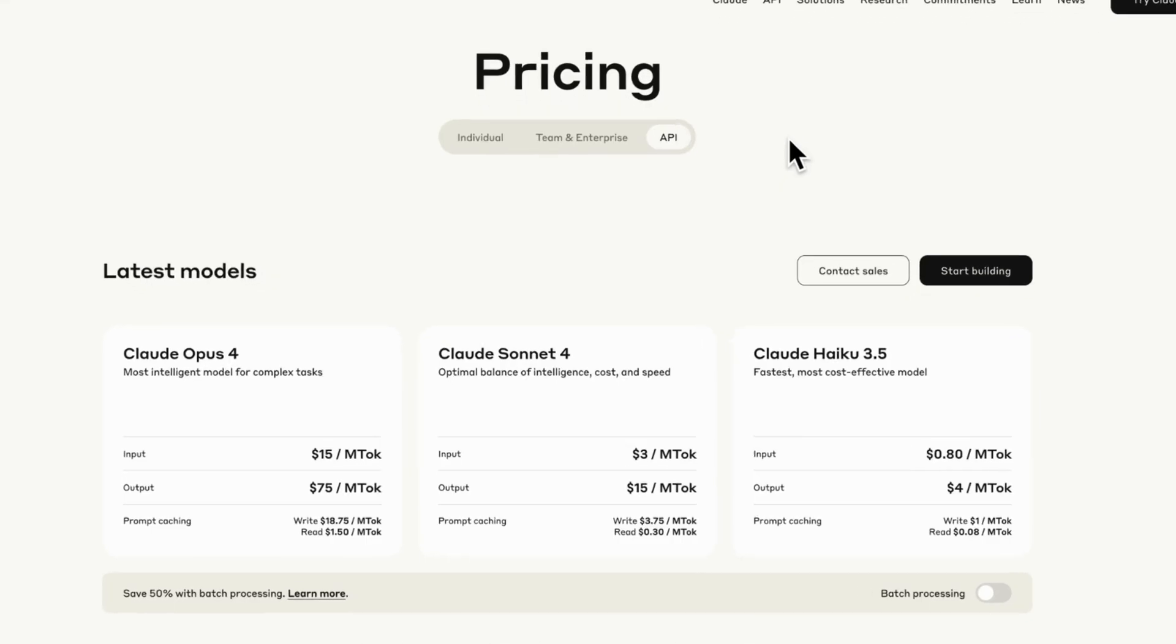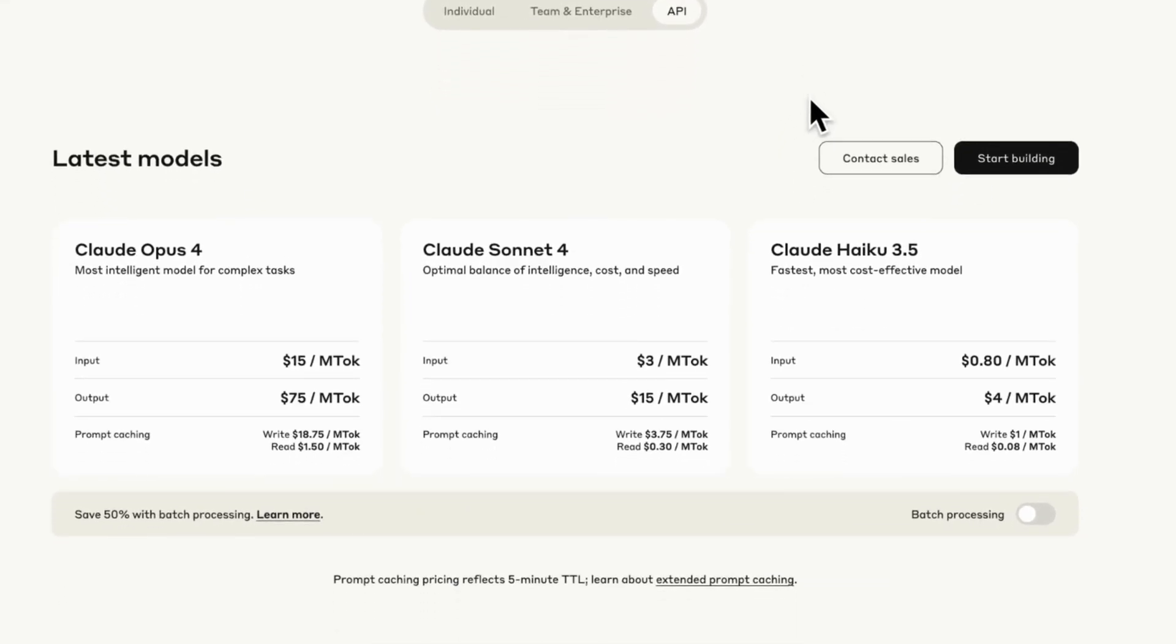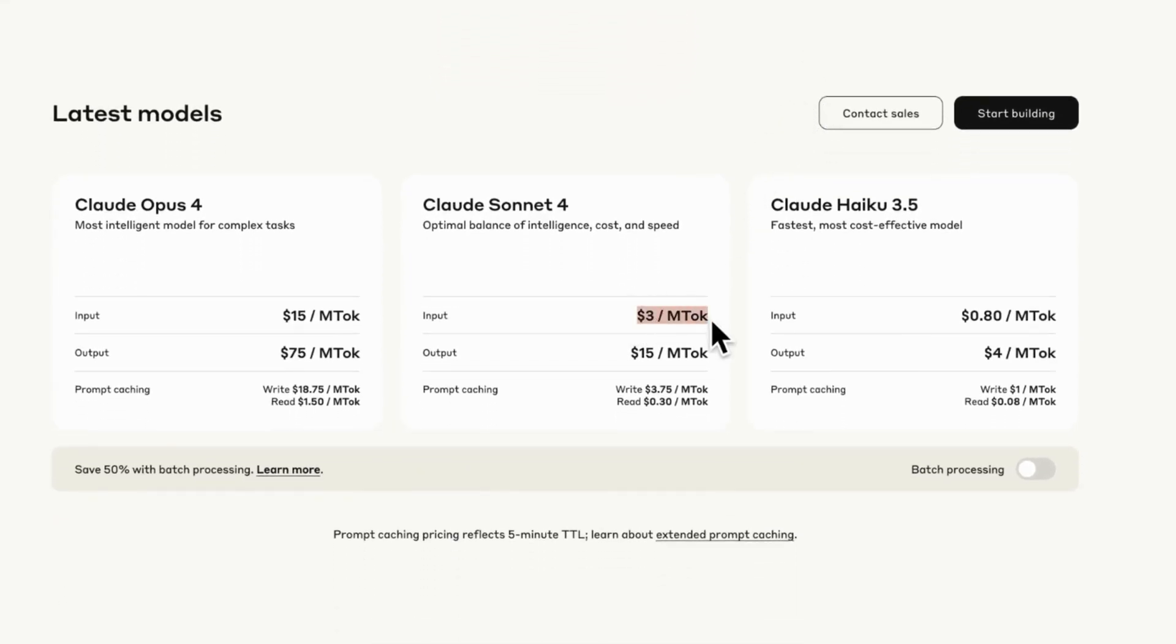Let's break down Claude pricing to make it clear. If you are using Claude via API, Sonnet 4 will cost $3 per 1 million input and $15 per 1 million output. Opus will be 5x more expensive.